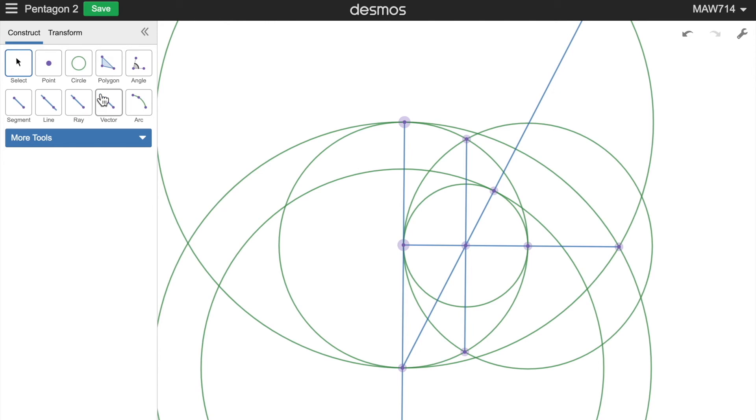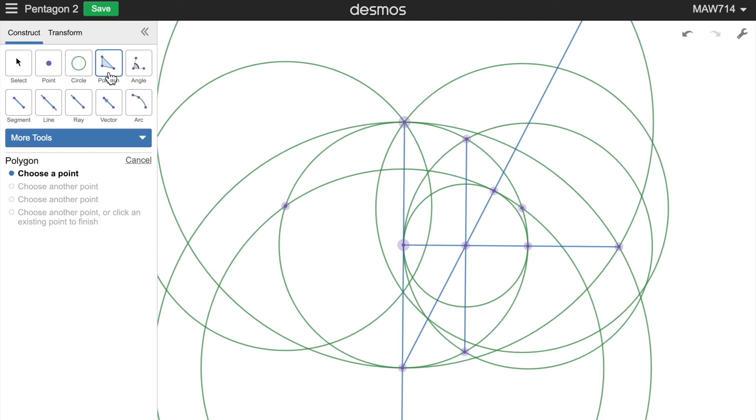We'll connect this point here with that point there and this point here with that point there and then we have these two new points and we have to connect them all together to create our pentagon. Just be careful that you're picking the right point. It's very easy to get mixed up with all these points. There we go. There we go. That's the new improved pentagon.